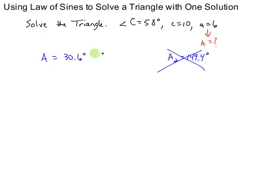Now I know angle C and angle A. I can easily find angle B by subtracting those from 180. To get 91.4 degrees.